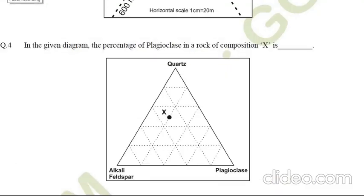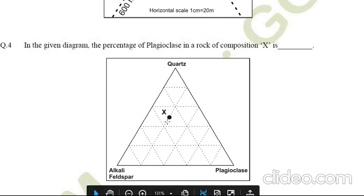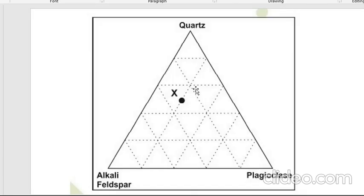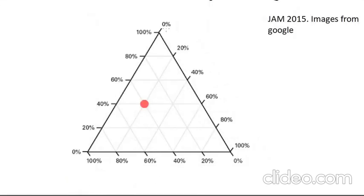Now question number four from JAM 2015. It is given that in the diagram, find the percentage of plagioclase at composition X. Here is the diagram. These types of diagrams are called ternary diagrams. This one shows quartz (Q), alkali feldspar (A), and plagioclase (P) — a QAP ternary diagram. The corners are called apexes.